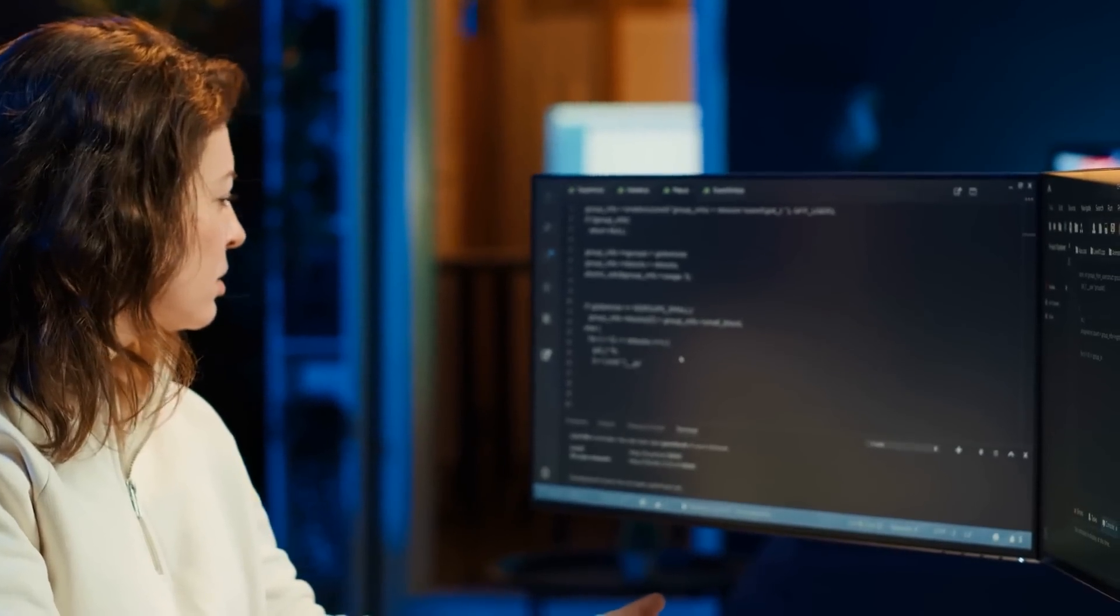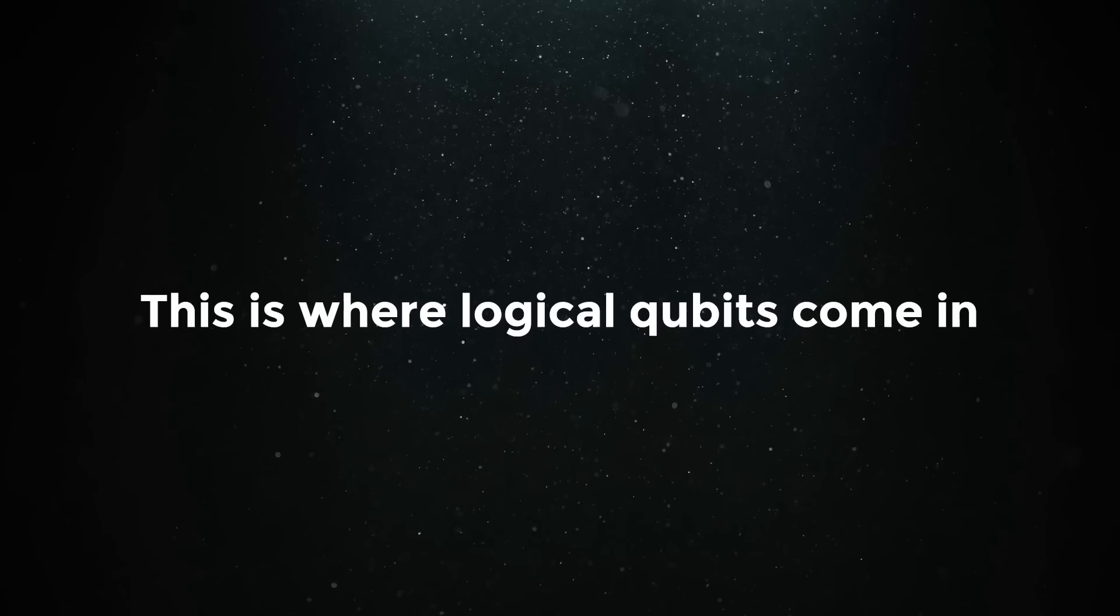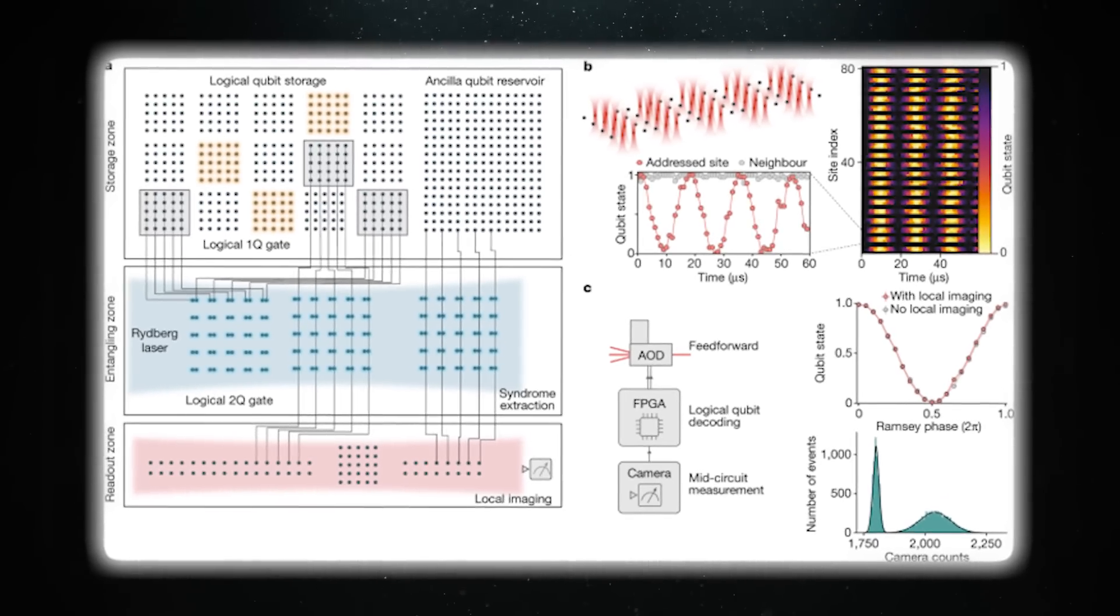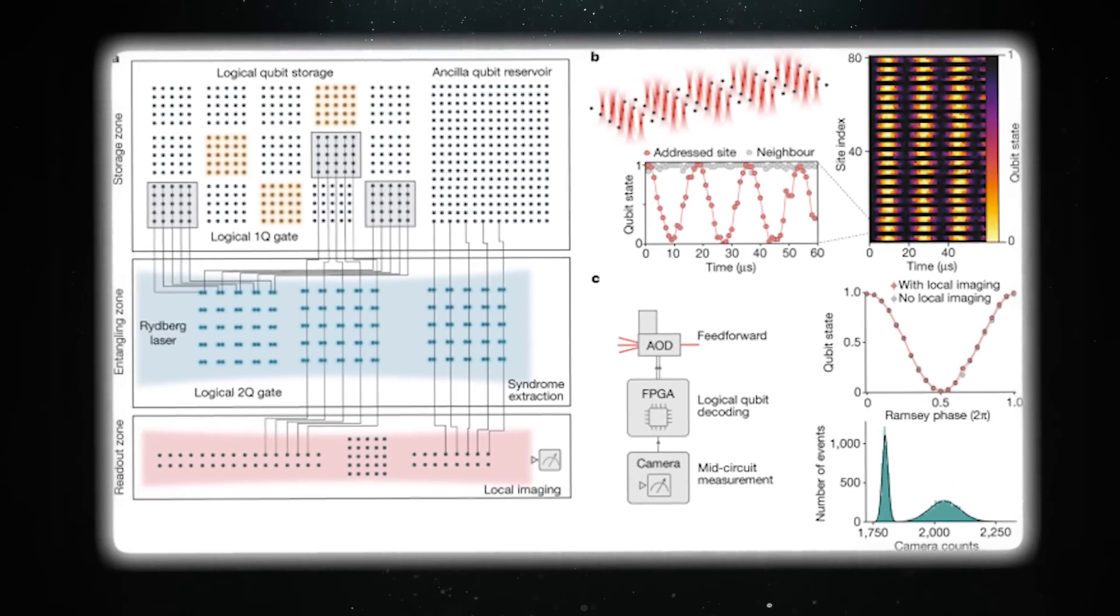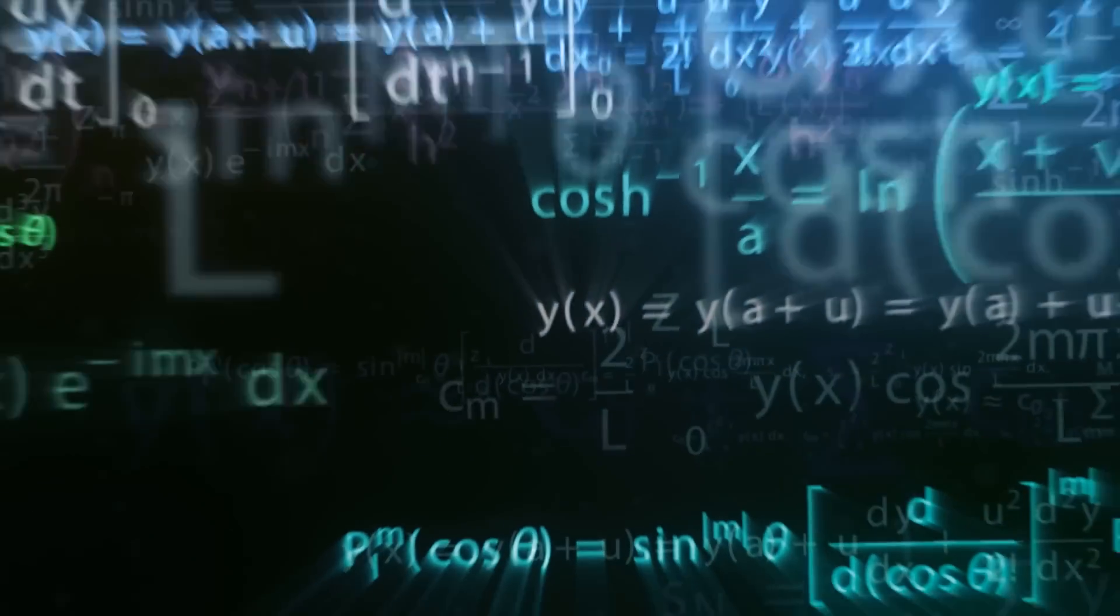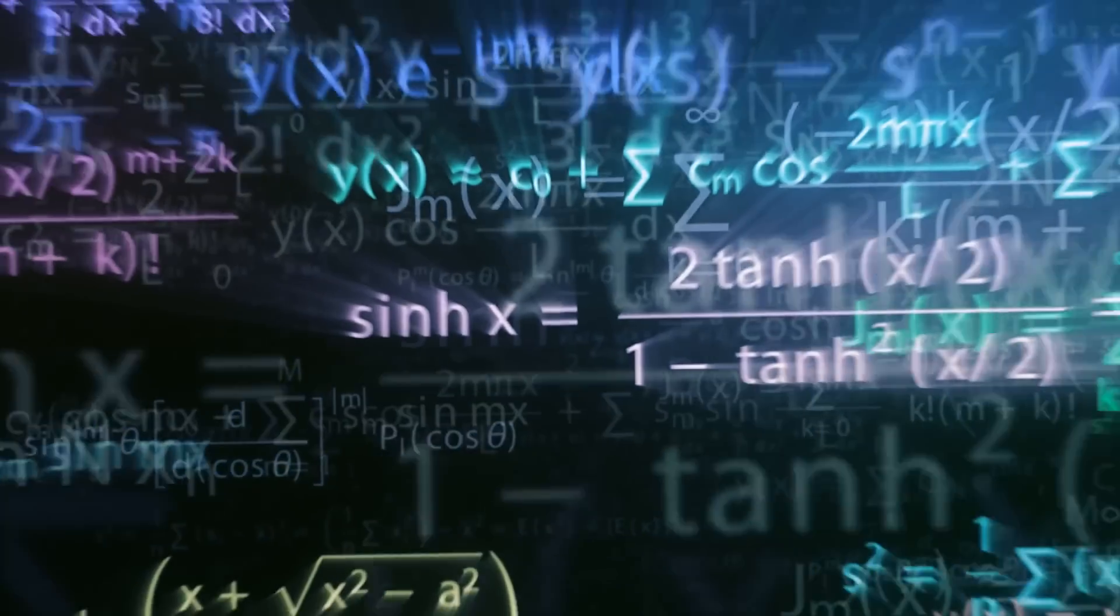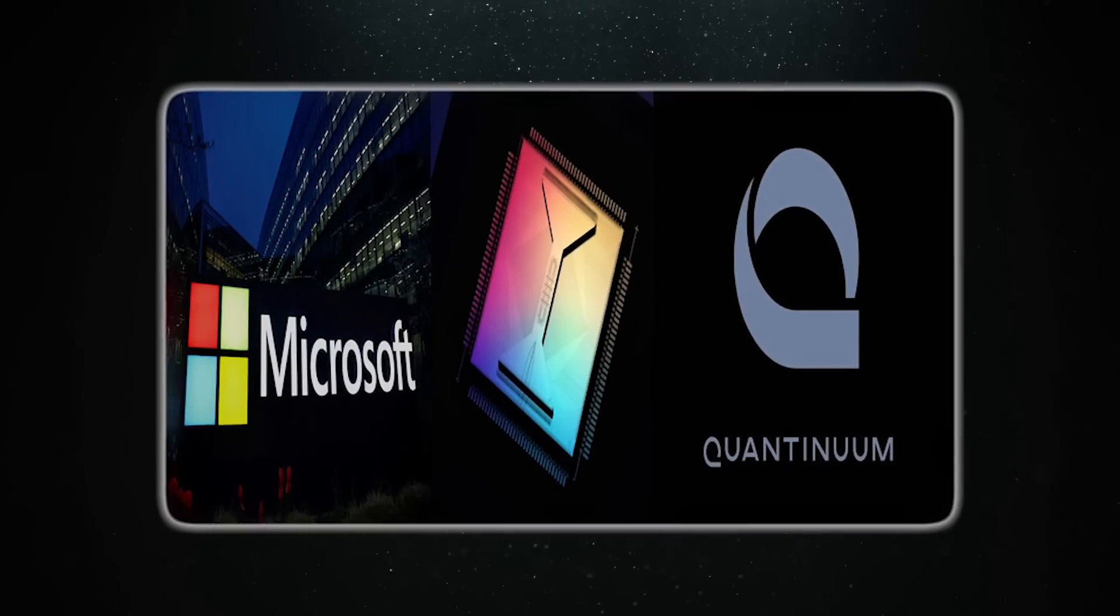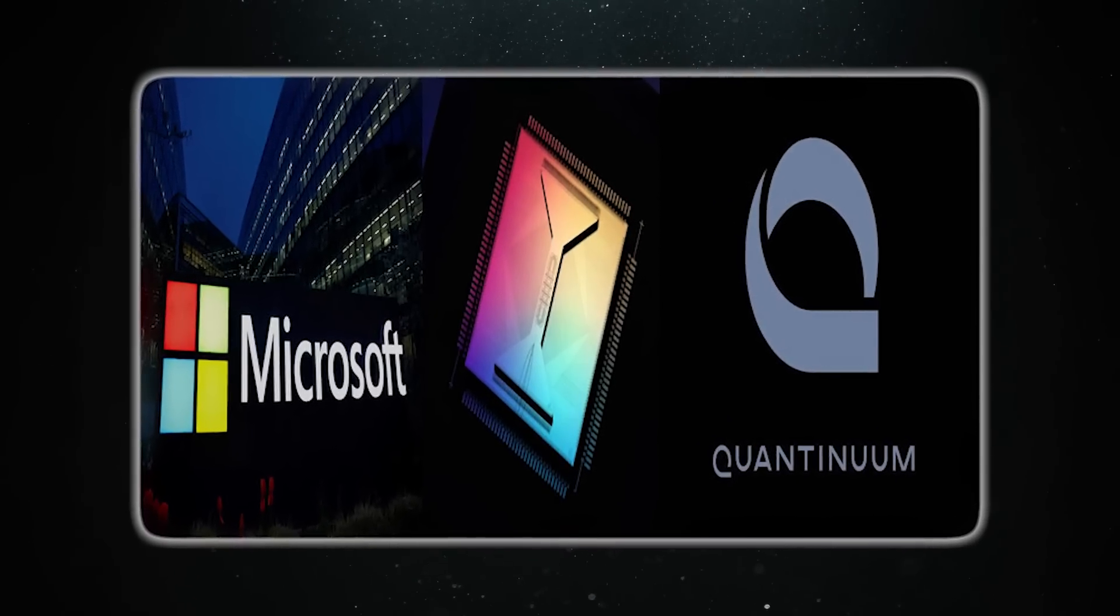However, qubits are also very fragile and prone to errors. This is where logical qubits come in. Logical qubits are made from combining several physical qubits in a way that reduces the chance of errors. The goal is to make them as stable and reliable as possible, so quantum computers can run complex calculations without making mistakes. A few months ago, Microsoft and Quantinuum started working together on this.